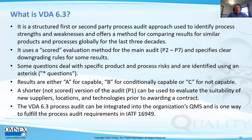Unlike a management system audit, VDA 6.3 gives scores rather than non-conformances. There are 59 questions that are scored, and based on the results, organizations receive a ranking of A (quality capable), B (conditionally quality capable), or C (not quality capable). VDA 6.3 has seven process elements. P1, the potential analysis for brand-new suppliers, is not scored but uses a traffic-light system of red, yellow, or green.